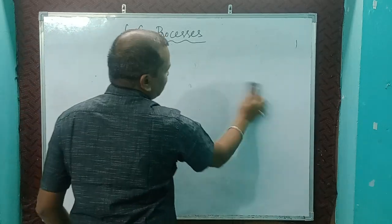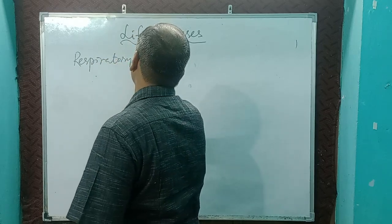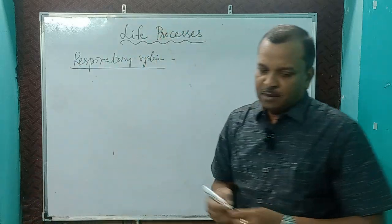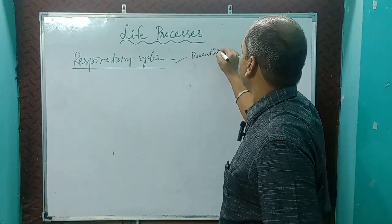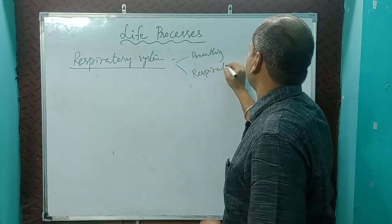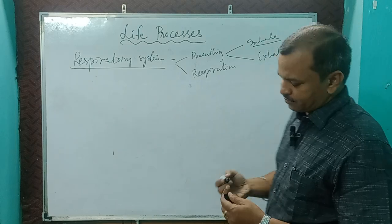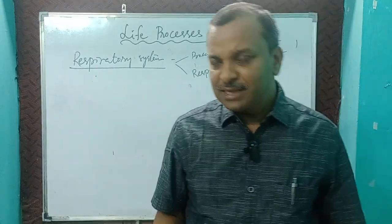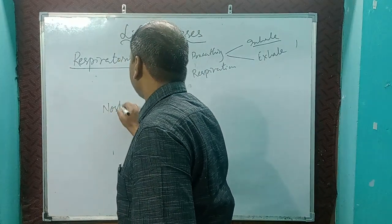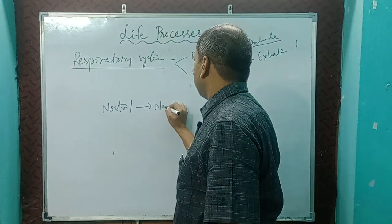From life processes, some questions may come on digestion. Next one is the respiratory system. The respiratory system has two parts: breathing and respiration. Breathing is the inhale and exhale of gases. Breathing starts from the nostril, then goes to the nasal cavity.